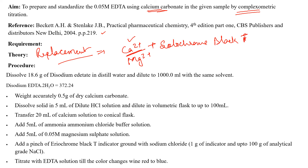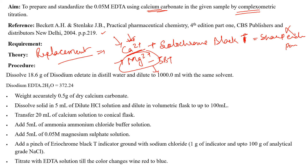This indicator is not sensitive to calcium alone — it will not give a sharp end point or sharp color change with calcium. That is why magnesium is added. Magnesium replaces calcium and forms a complex with Eriochrome Black T. When EDTA is added, it first reacts with free calcium ions in solution, then with magnesium ions complexed to Eriochrome Black T. The color changes from wine red to blue when all the magnesium is consumed by EDTA, indicating the end point.